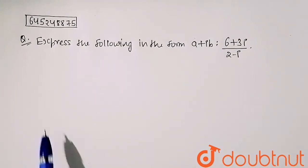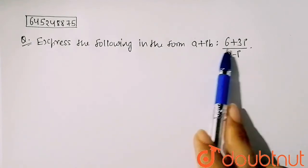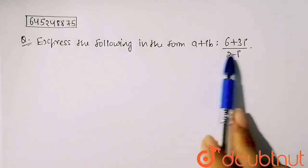It is given that express the following in the form of a plus iota b: (6 + 3 iota) upon (2 - iota).